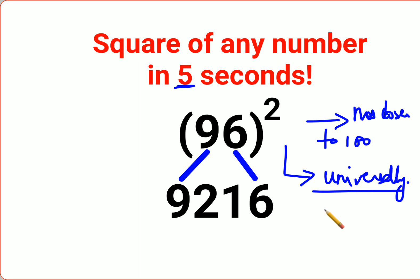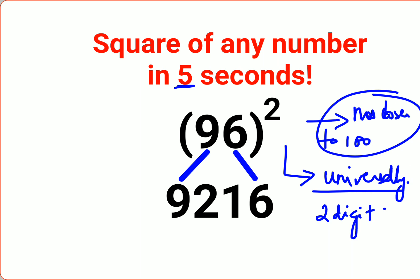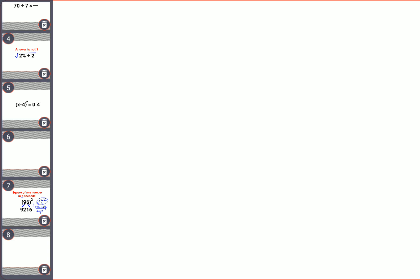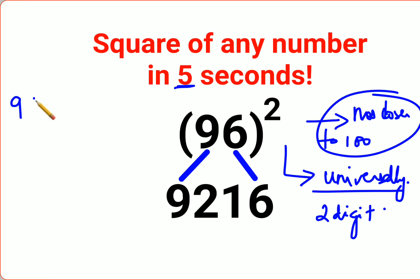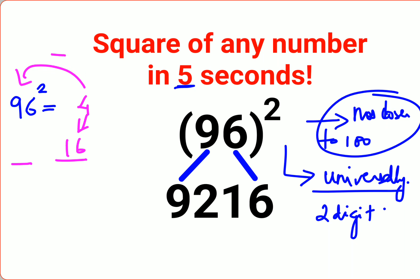First, let's talk about numbers closer to 100. Take 96 squared. You check how far it is from 100 — it is 4 away. Your answer has two parts: the first part is 4 squared, which is 16, and then you subtract 4 from 96 to get 92.